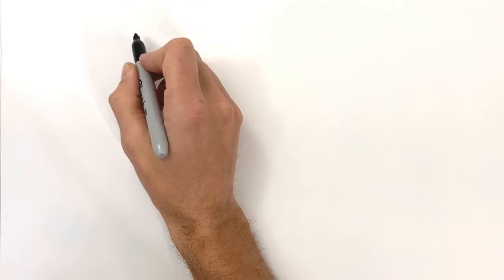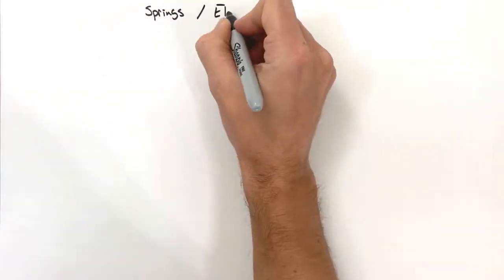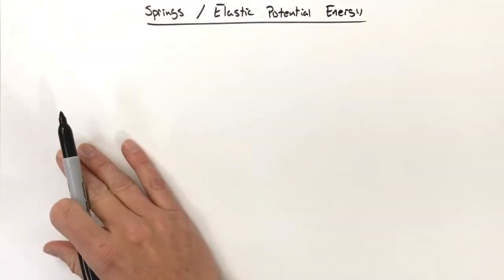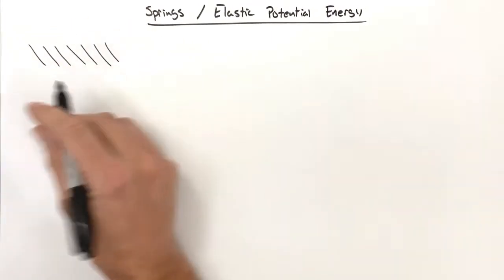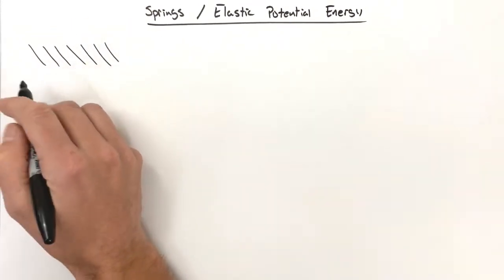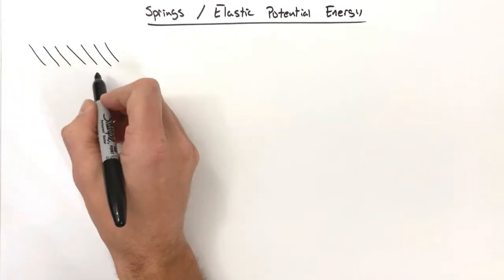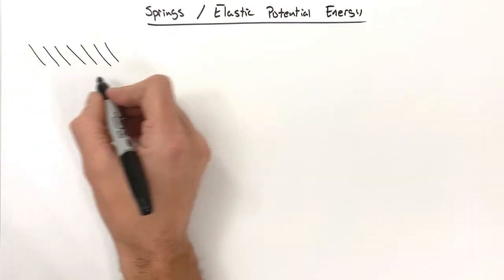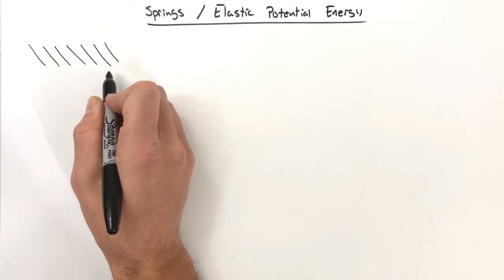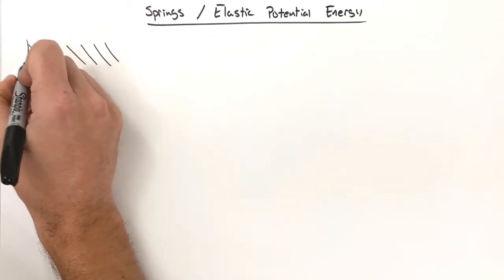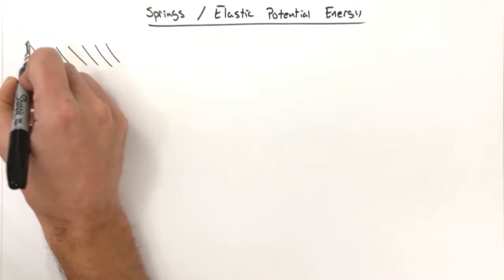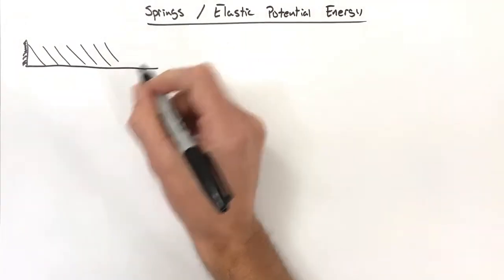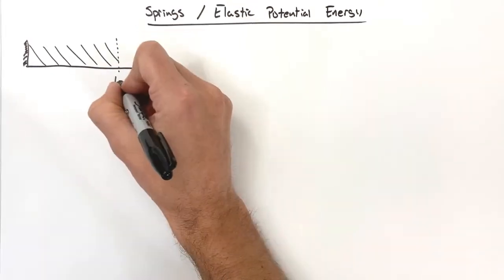Today we're talking about springs and elastic potential energy. To start our discussion, let's take a look at a spring. We have a spring at some initial length L — relaxed, unstretched, and uncompressed. We're going to stick this spring up against a wall and allow it to rest on a frictionless floor. This spring has initial length L-initial.